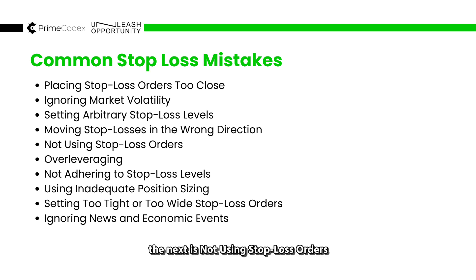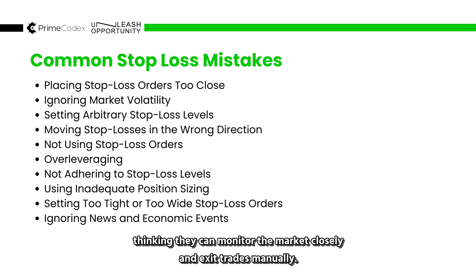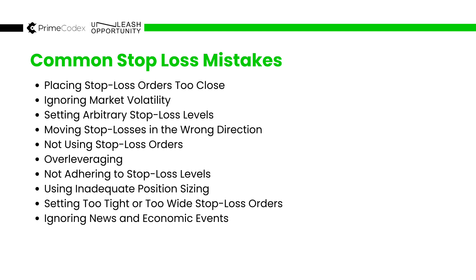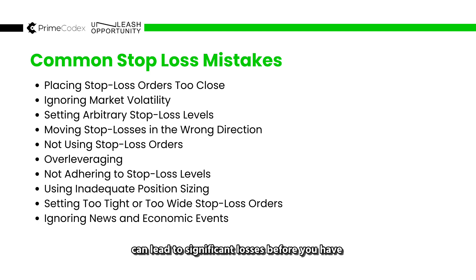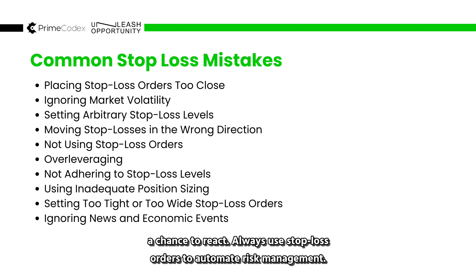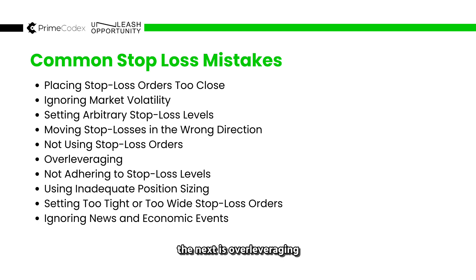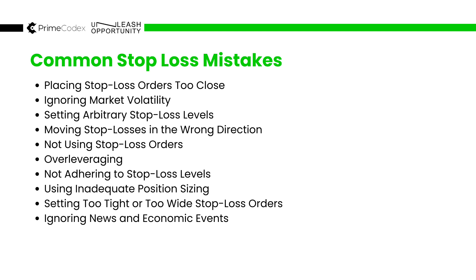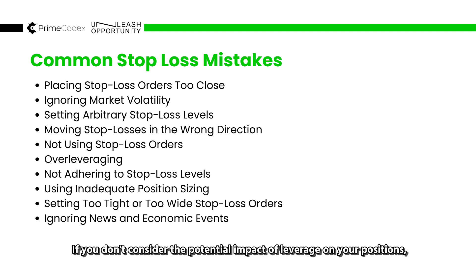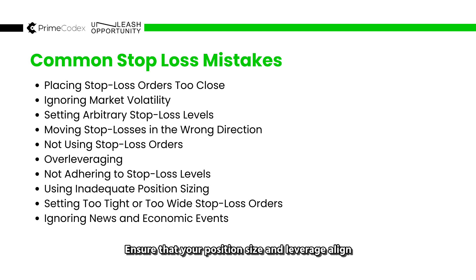The next mistake is not using stop loss orders at all. Some traders choose not to use stop loss orders, thinking they can monitor the market closely and exit trades manually. This can be risky because unexpected events or market gaps can lead to significant losses before you have a chance to react. Always use stop loss orders to automate risk management. The next is over-leveraging — excessive use of leverage can lead to larger losses than anticipated. If you don't consider the potential impact of leverage on your positions, even a small price movement can trigger a significant loss. Ensure your position size and leverage align with your risk tolerance and trading strategy.